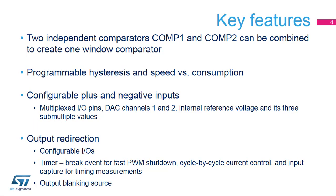The two integrated comparators can be combined into a single window comparator. The analog properties of the comparator include hysteresis or a trade-off between speed and power consumption, which are configurable. It offers flexible interconnections of inputs and outputs allowing a threshold selection of several external and internal inputs such as DAC outputs or internal reference voltage outputs. The comparator output can be connected to IOs using the alternate function channels or internally redirected to timer inputs such as enabling the break event for fast PWM shutdown.